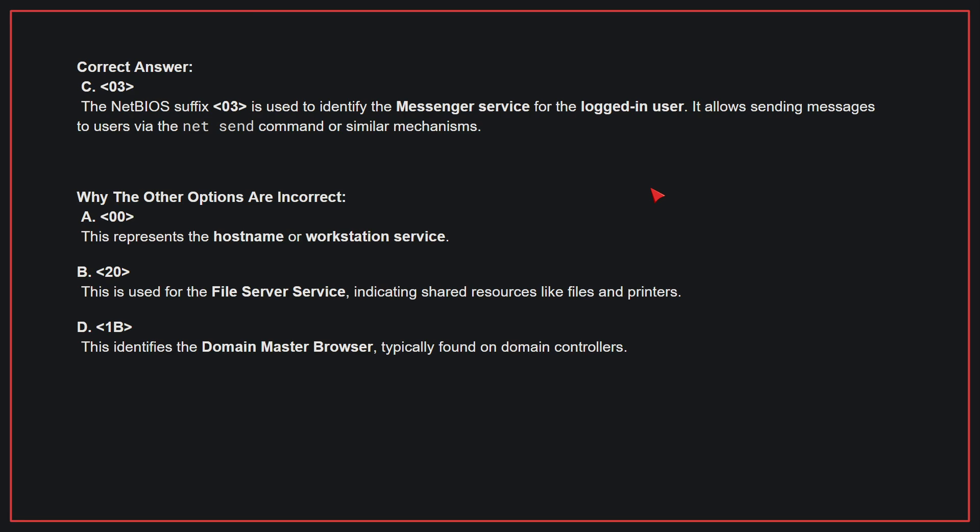Why the other options are incorrect: A — 00. This represents the host name or workstation service. B — 20. This is used for the file server service, indicating shared resources like files and printers. D — 1B. This identifies the domain master browser, typically found on domain controllers. Therefore, the correct answer is C.